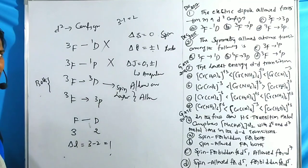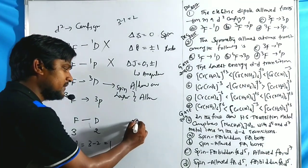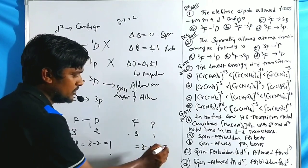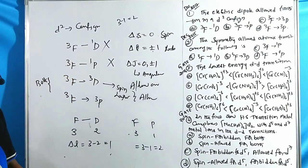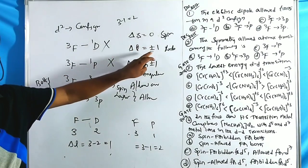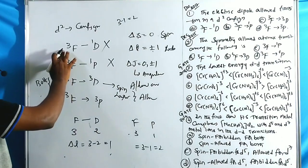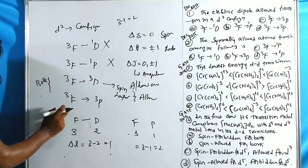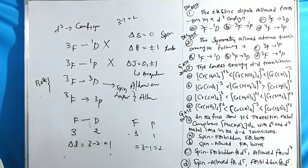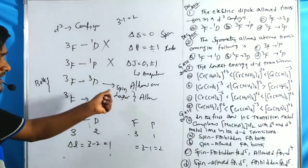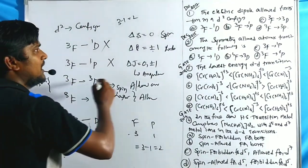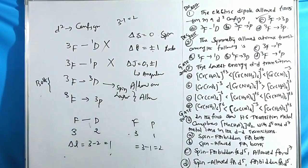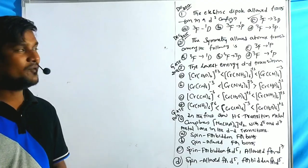For the fourth option, ³F → ³P: L(F) = 3, L(P) = 1, so ΔL = 3 − 1 = 2, which does not equal ±1 — this is Laporte forbidden. Therefore option C, ³F → ³D, is both spin and Laporte allowed and is the correct answer.